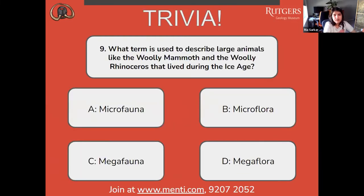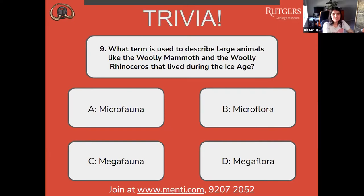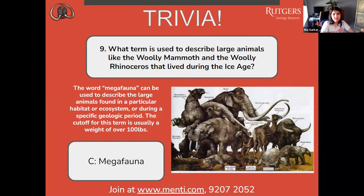Number nine: what term is used to describe large animals like the woolly mammoth and the woolly rhinoceros that lived during the ice age? A, microfauna; B, microflora; C, megafauna; or D, megaflora. The correct answer is C, megafauna. The word megafauna can be used to describe large animals found in a particular habitat or ecosystem or during a specific geologic period. The cutoff for this term is usually a weight of over 100 pounds.